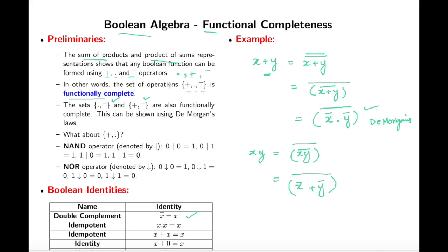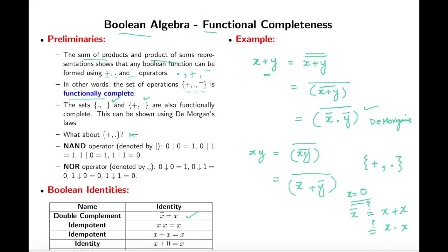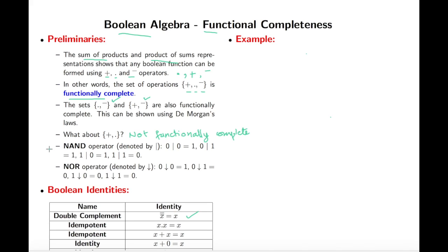Both {product, complement} and {plus, complement} are functionally complete. But what about the set {plus, product}? Note that we cannot make a complement using just plus and product. If f(x) = 0, we need x-complement, but x plus x or x times x won't give us 1. So {plus, product} is not functionally complete.